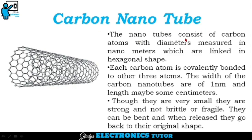Next, we'll see about carbon nanotubes. The nanotube consists of carbon atoms with diameters measured in nanometers, which are linked in a hexagonal shape. Each carbon atom is covalently bonded to three other atoms. The width of carbon nanotubes is about one nanometer and length may be some centimeters. Though they are very small, they are strong and not brittle or fragile — they can be bent and when released they go back to their original shape.